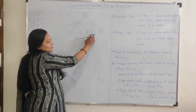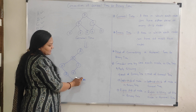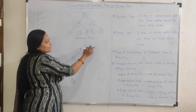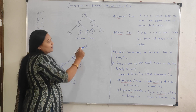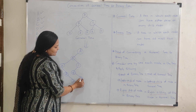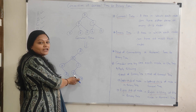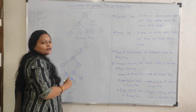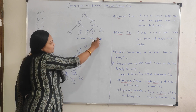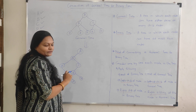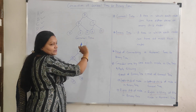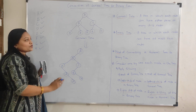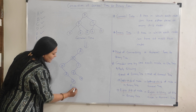Now consider node G. G has no leftmost element, so it has no left child. G's right sibling is H, so H becomes the right child of G in the binary tree. Now consider node H. H has no leftmost child and no right sibling, so H has no left or right child. In this way we can convert a general tree into a binary tree.